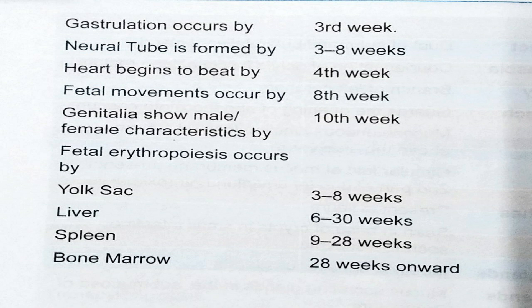liver from six to thirtieth week, spleen from nine to twenty-eighth week, and bone marrow from twenty-eight weeks onward. That's all for this video.